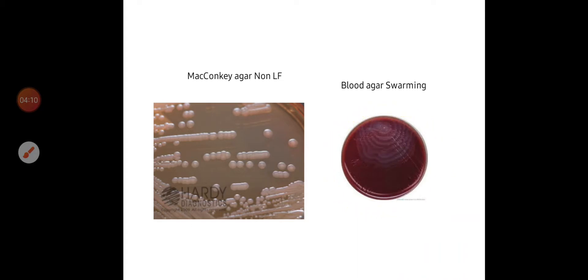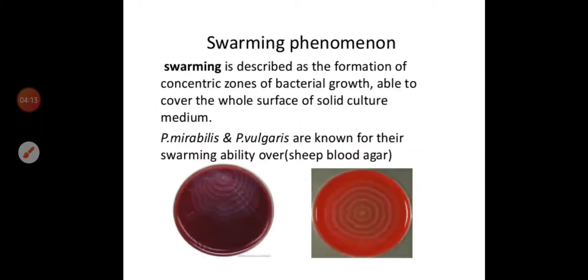Swarming phenomena is defined as the formation of concentric zones of bacterial growth that can grow over the whole surface of solid culture media. It is successive waves of translucent growth over the whole surface of the culture media on which they grow. This is the swarming phenomena.